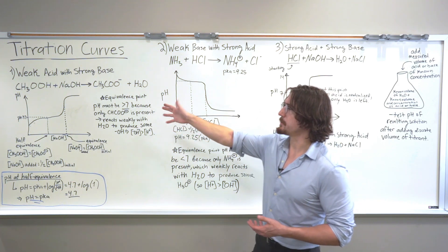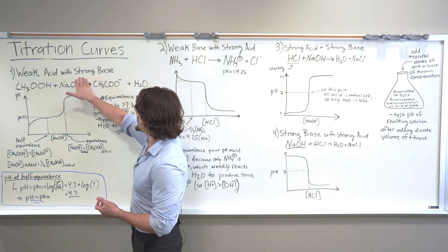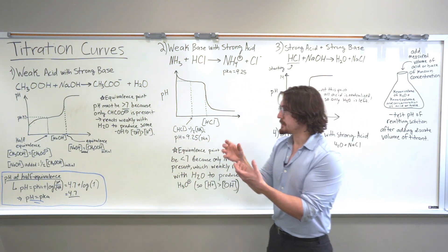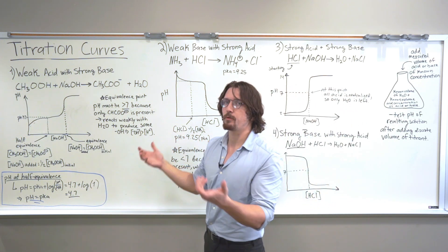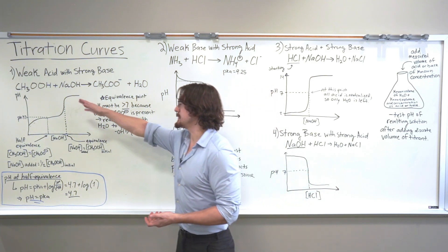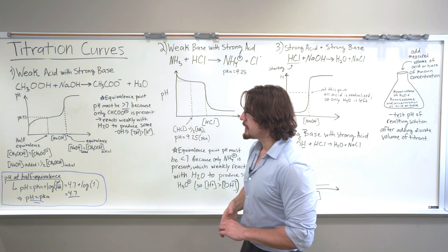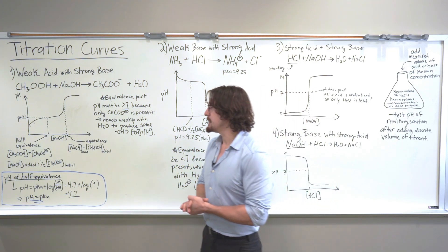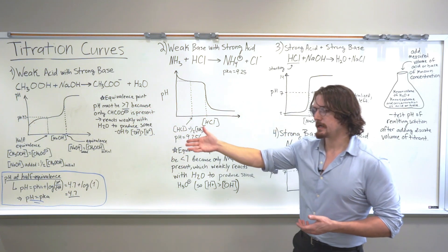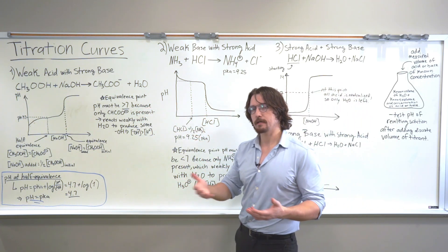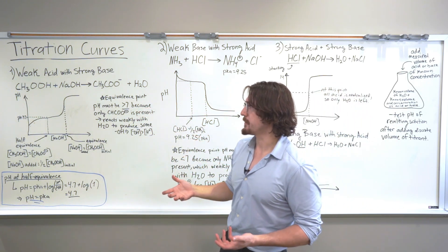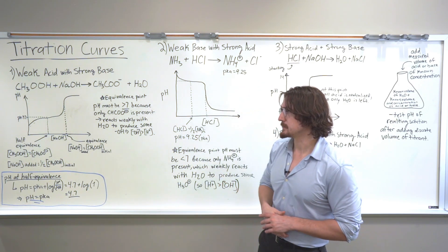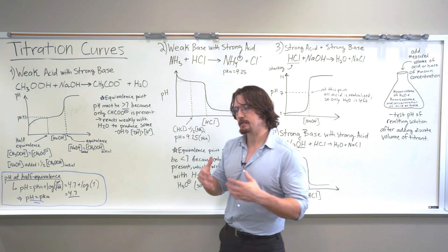The first scenario is going to be a weak acid being titrated by a strong base. In our volumetric container, to begin with, we have an aqueous solution of some weak acid — a good example is acetic acid. When we just have that, it's just a weak acid, nothing has been added. That acid, since it's a weak acid in aqueous solution, it reacts weakly with water to produce some amount of hydronium or protons. So you will have an acidic solution.